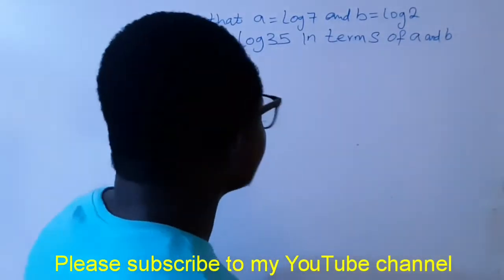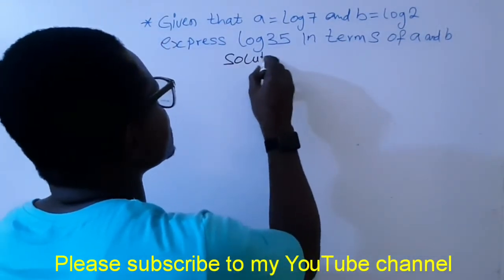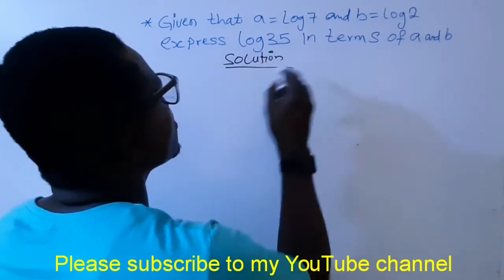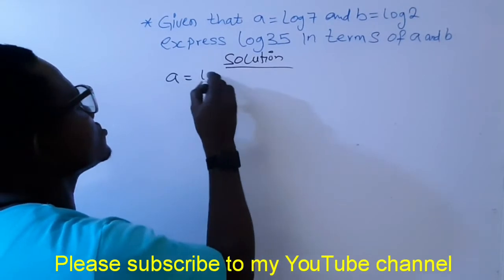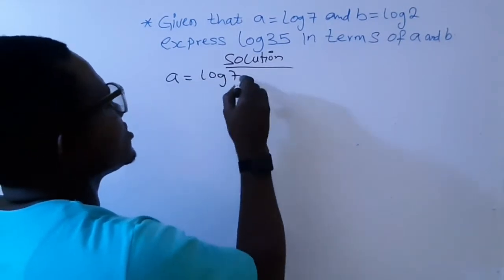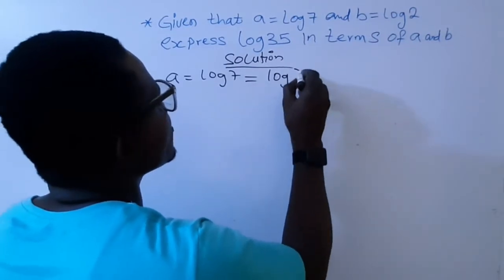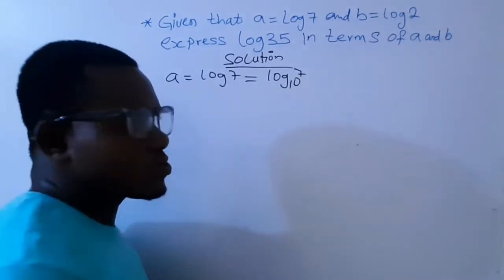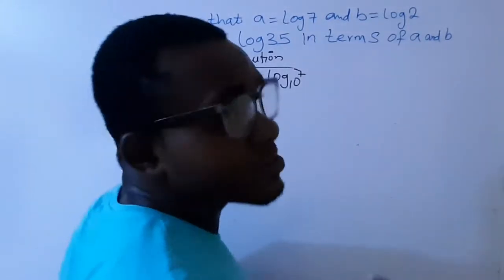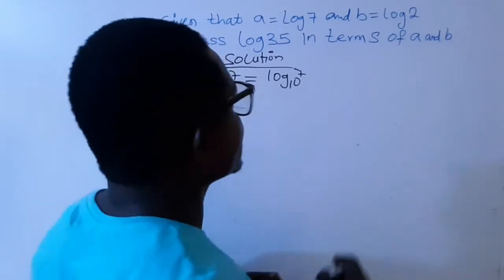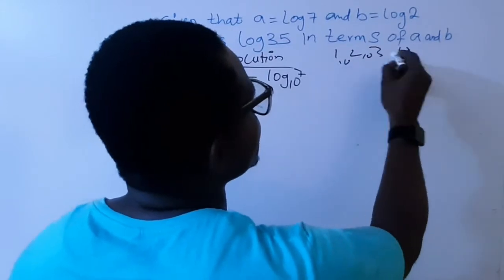Don't forget that when we have log A to B equals log 7, also know that this is equal to log 7 basically. So you know that all our rational numbers, all our numbers are in base 10, from 1, 2, 3, 4, like that. So all of them are in base 10.